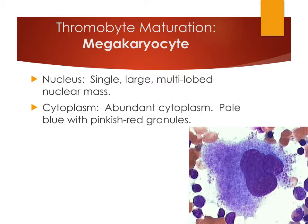The megakaryocyte may occasionally be seen circulating, especially in patients producing excess platelets or with highly active bone marrow releasing immature cells — such as during regeneration. It has a big, blobby, multi-lobed nuclear mass and very large cytoplasm that is visibly breaking off into platelets. It generally stains pale blue, sometimes with granules.